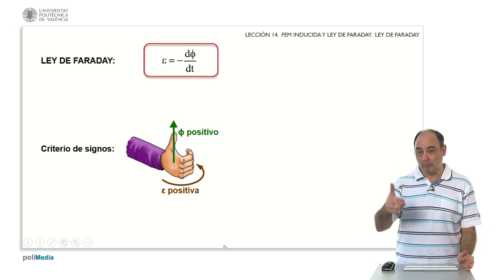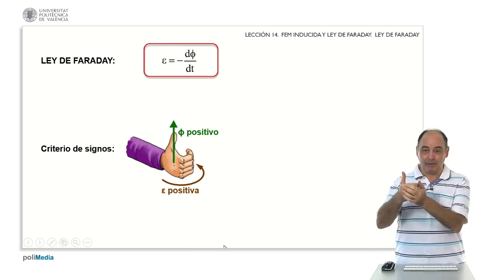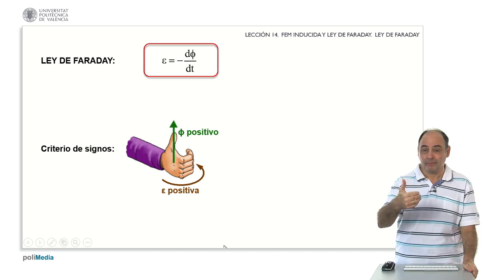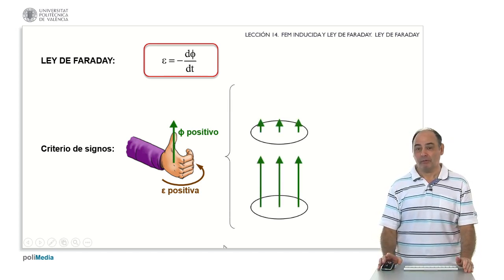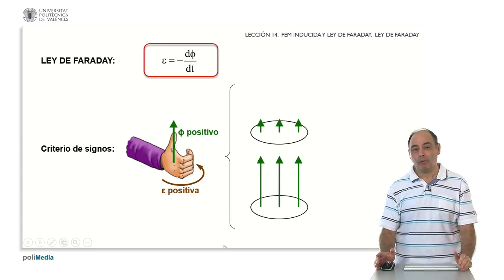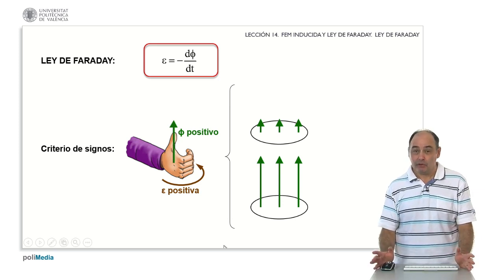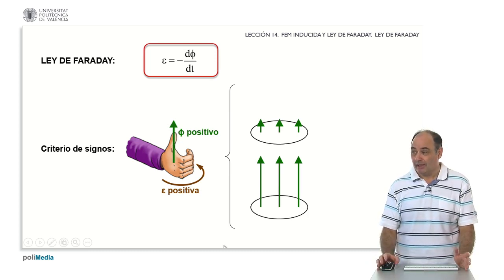Specifically, if the thumb indicates the direction of the magnetic flux, then the palm of the hand tells me how the current is rotating, because it tells me the direction of the electromotive force, and therefore that of the induced current. How can we interpret this? Let's take a look at two possible scenarios. The one above, we are going to represent a magnetic field varying positively — that is, we have an increasing flux. I said because the magnetic field grows, actually, it would also serve me to increase the area, or for it to be better oriented.